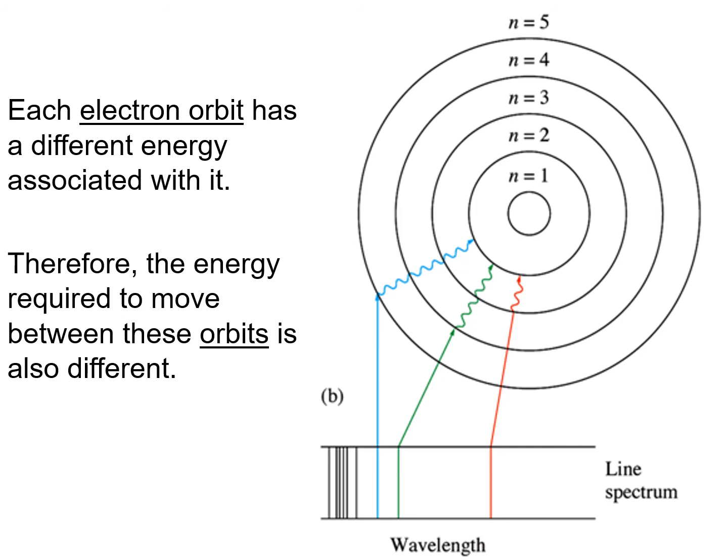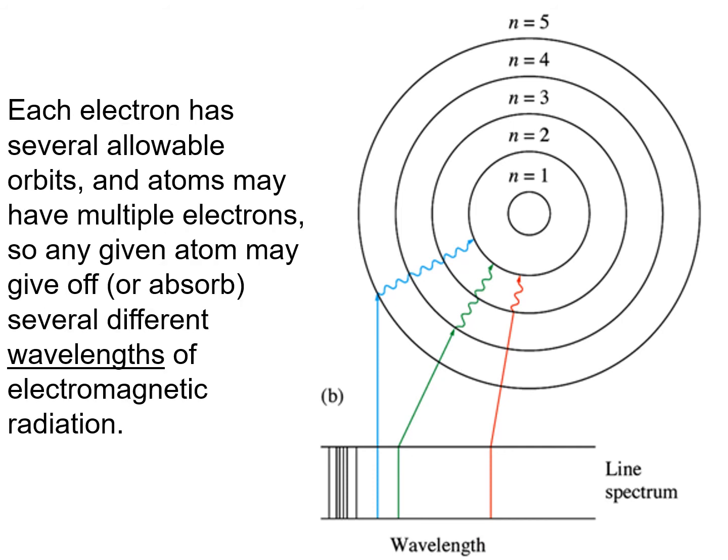An electron can only stay excited for so long. Then it will lose that energy. It will lose a certain amount of energy, a quantum, and go back to the ground state. When it loses energy, it loses a particular amount of energy, and that particular amount of energy is associated with a particular wavelength. In other words, it will be a particular color if that light strikes our eyes.